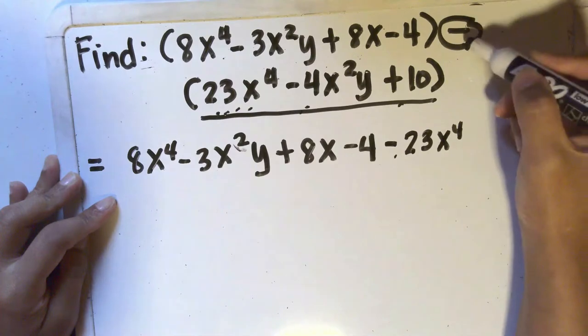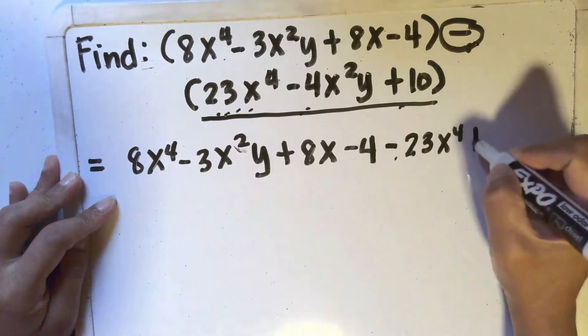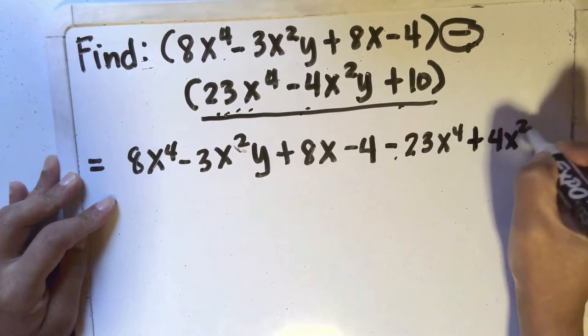Okay? It will be minus negative 4x squared y which is the same as plus 4x squared y.